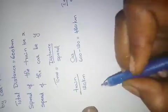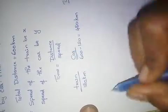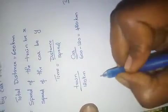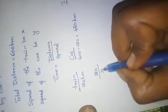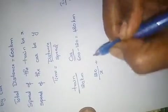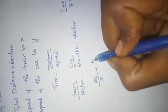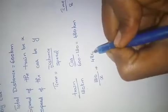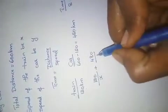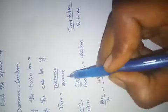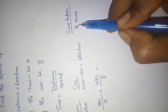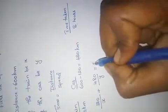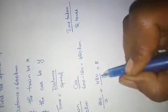Now write the equation using distance by speed. Distance by train is 120, speed of train is x. Plus distance by car is 480, speed of car is y. This equals to 8 hours. So: 120/x + 480/y = 8.